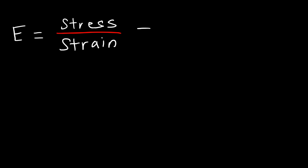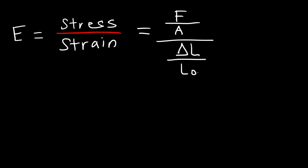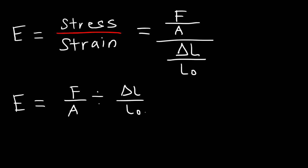Stress is force over area. Strain, on the other hand, is a measure of the material's response to the stress applied — it tells you the fractional change in the length of the object. Strain is the change in length divided by the original length. So we can say that the elastic modulus, or Young's modulus, is F over A divided by delta L over L initial. Using keep-change-flip: keep the first fraction F over A, change division to multiplication, and flip the second fraction.